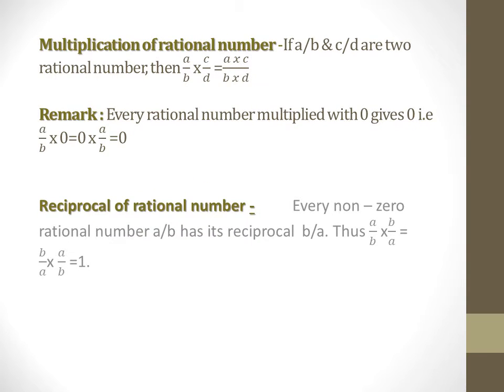Multiplication of Rational Numbers: If a/b and c/d are two rational numbers, then a/b × c/d = (a×c)/(b×d). It means numerator multiply by numerator and denominator multiply by denominator.